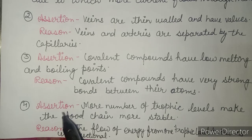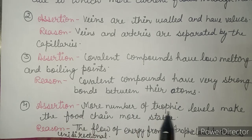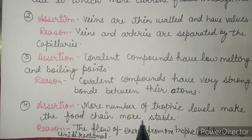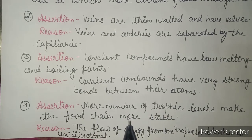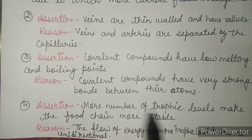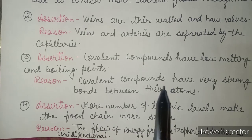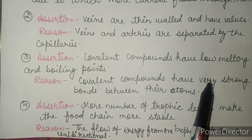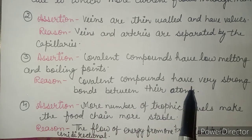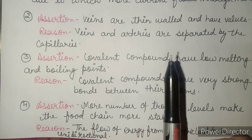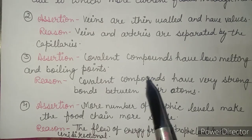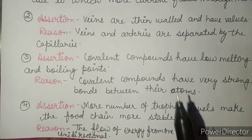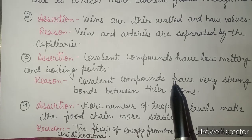In the fourth example, the assertion is: more trophic levels make the food chain more stable. This is not true — as the number of trophic levels increases, energy availability at the last trophic level becomes very less, making survival difficult. Only 10% of energy is transferred from one trophic level to the next, so more levels means less energy available.